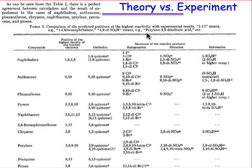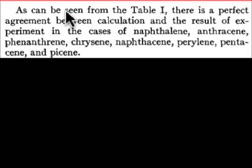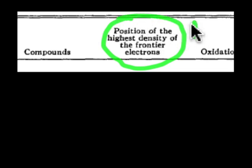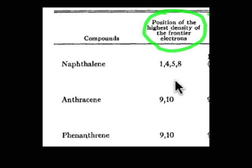Before giving the details of the theory, let's see how it does by comparing theoretical predictions to experimentation. Here's the description from Fukui's paper: as can be seen in Table 1, there's perfect agreement between the calculation and the results of experimentation in the case of molecules such as naphthalene, anthracene, and the molecule we chose, phenanthrene. This column in Table 1 gives the theoretical prediction by describing the positions in the molecule with the highest density of electrons in the highest occupied molecular orbital. Phenanthrene has the greatest electron density in the highest occupied molecular orbital at positions 9 and 10.